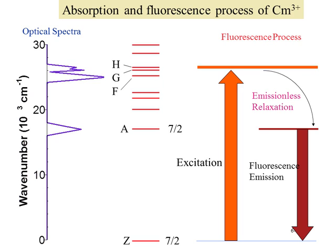One of the interesting spectroscopic properties of curium is fluorescence. A curium compound is excited based upon UV-visible spectroscopy — for curium-3, absorbances between 375 and 400 nanometers excite the electrons to a level where they undergo an emissionless relaxation to a state with J=7/2 spin, which is the same as the ground state, followed by fluorescence emission. The energy and lifetime of this process can be measured, giving information about the electronic structure, which is dictated by the speciation of the curium. This fluorescence process is therefore very sensitive for evaluating curium speciation in solutions and solids.